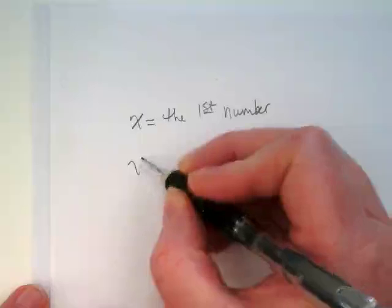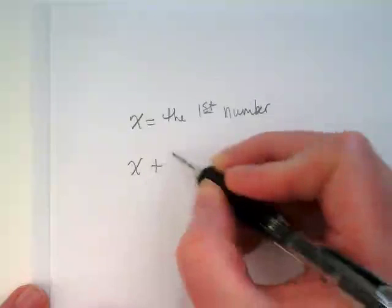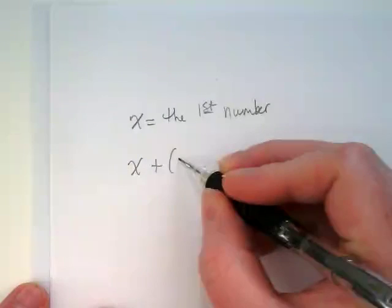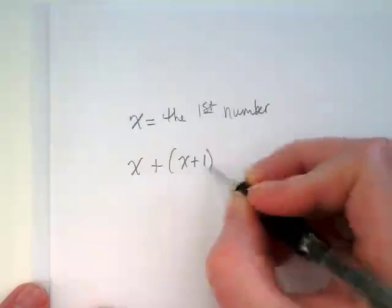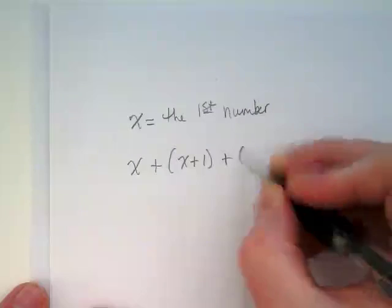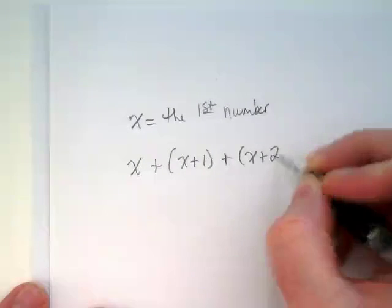X equals the first number. We're trying to find three numbers in a row that equal 132. So if X equals the first number, how much more than X is the second number? One more. So in parentheses, we're going to put X plus 1 to stand for the second number. How much more than the first number is the third number? Two more. So we're going to put X plus 2 in parentheses.